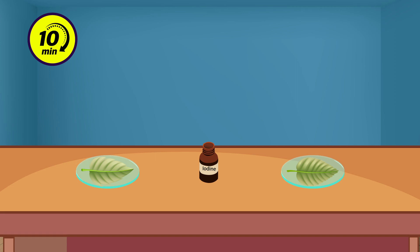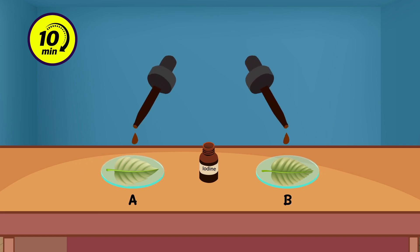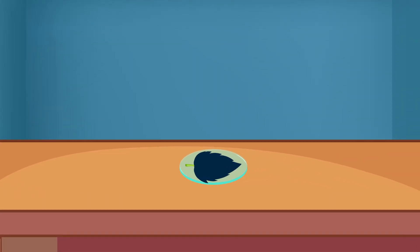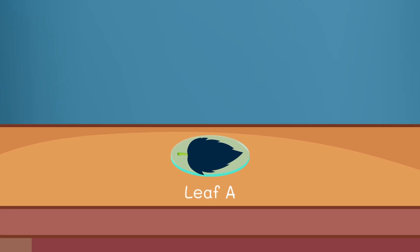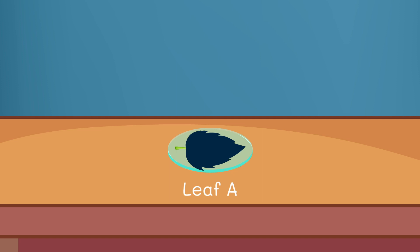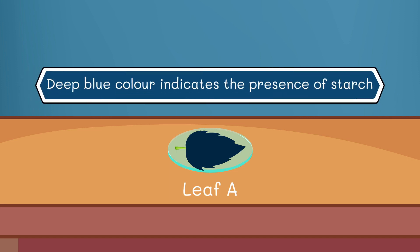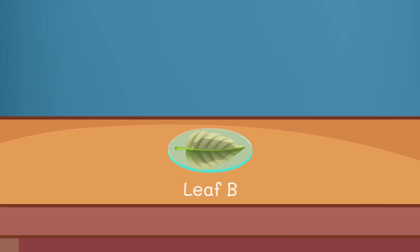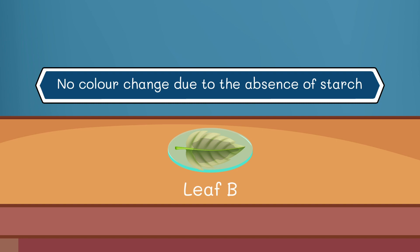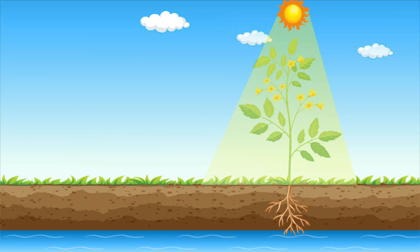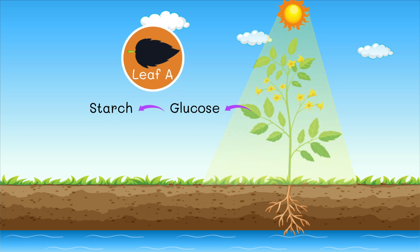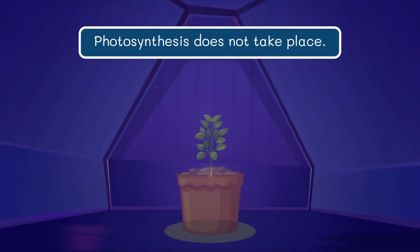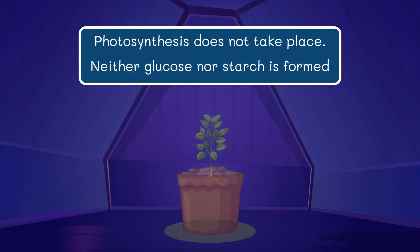After 10 minutes, take the leaves, place them on a petri dish, and add two drops of iodine to them. When we pour the iodine solution on leaf A, which is exposed to sunlight, it will turn into a deep blue color, indicating the presence of starch. When we pour the iodine solution on leaf B, which is kept in the dark, the deep blue color does not appear because of the absence of starch. In the presence of sunlight, leaves synthesize glucose which is then converted to starch, which is why the deep blue color change is noted in leaves exposed to sunlight. In the absence of sunlight, photosynthesis does not take place and neither glucose nor starch is formed.